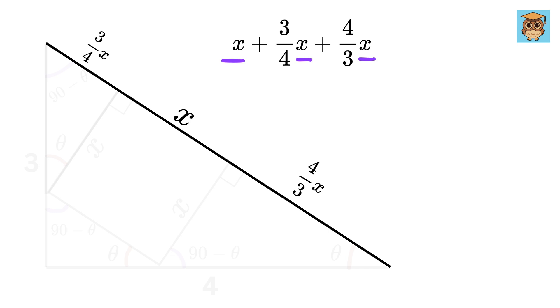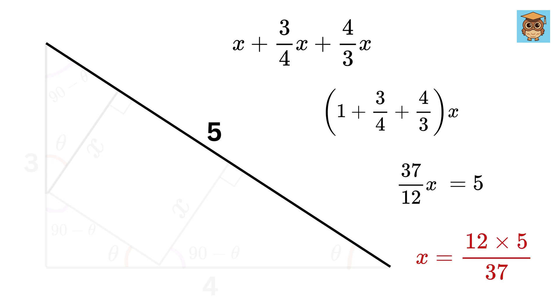Take x as common. We get 1 plus 3 by 4, plus 4 by 3 times x. This fraction will become 37 by 12 times x, but it is equal to 5. Solving this, we get x equals 12 times 5 by 37, or 60 by 37.